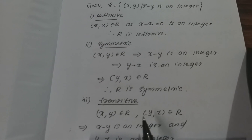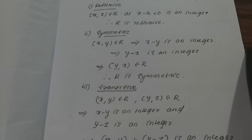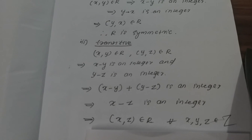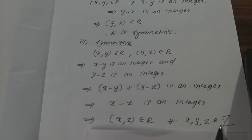The last property is transitive. If (x, y) belongs to R and (y, z) belongs to R, then x minus y is an integer and y minus z is an integer. Adding these two integers gives (x minus y) plus (y minus z) equals x minus z, which is also an integer. Therefore (x, z) belongs to R for all x, y, z in Z. So R is transitive.